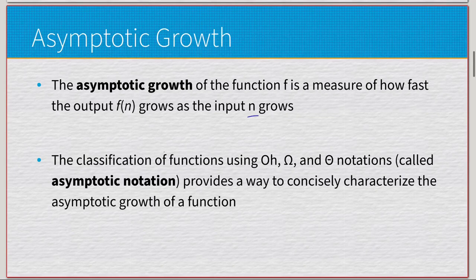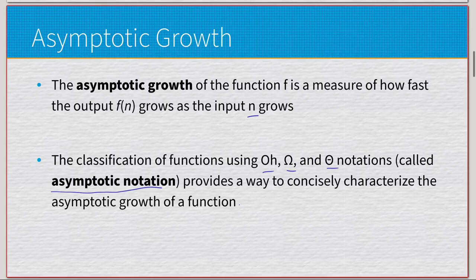The classification functions using Big O, Big Omega, and Big Theta — also called asymptotic notation — provide a way to concisely characterize the asymptotic growth of a function. These three notations are what we're going to use to compare various algorithms against each other. If we can quantify their rate of growth, we can determine which ones are more optimal in particular scenarios.